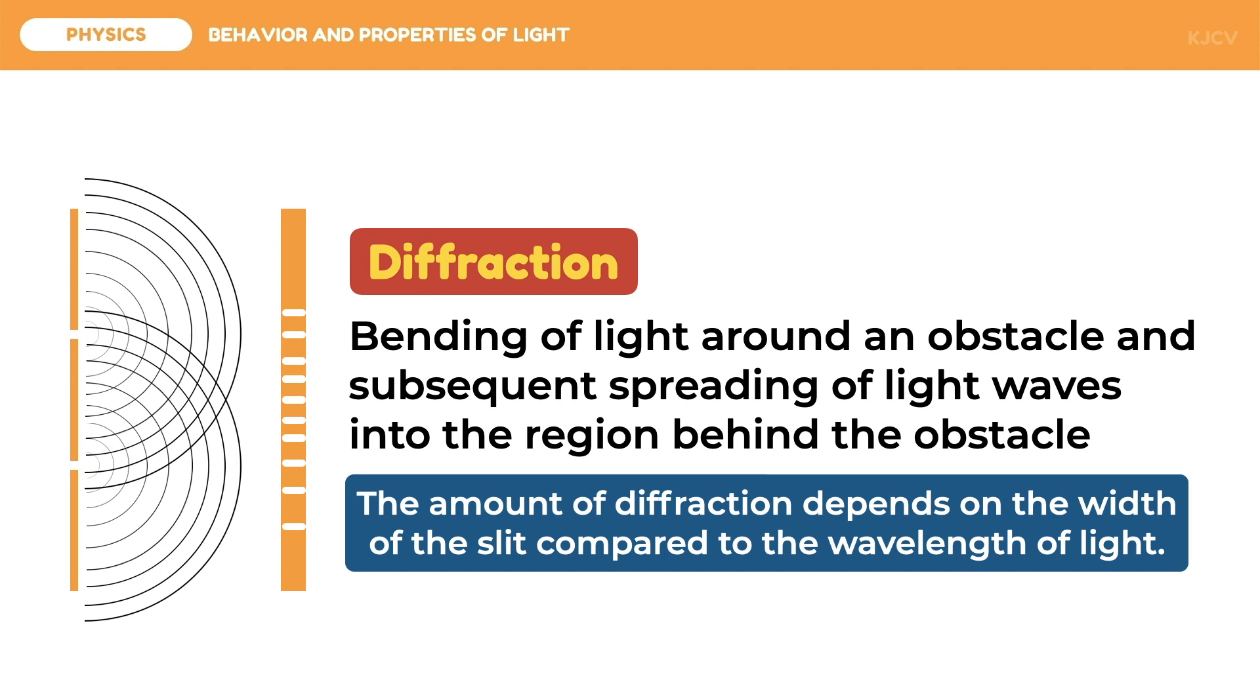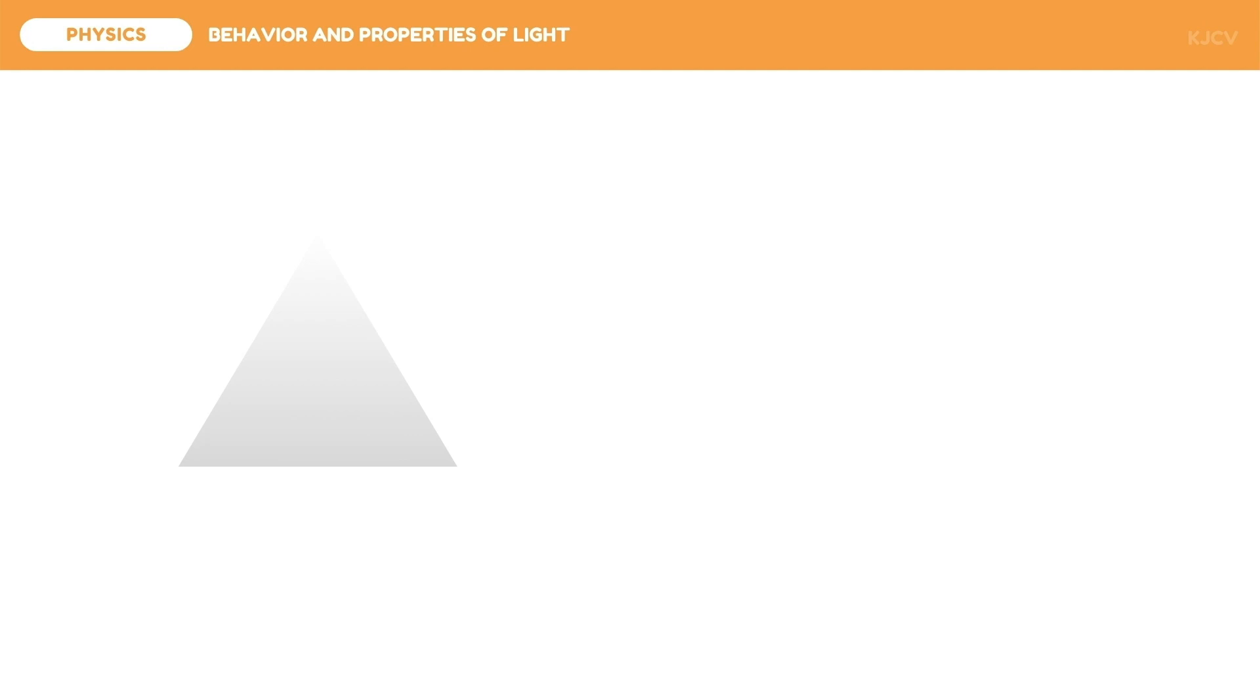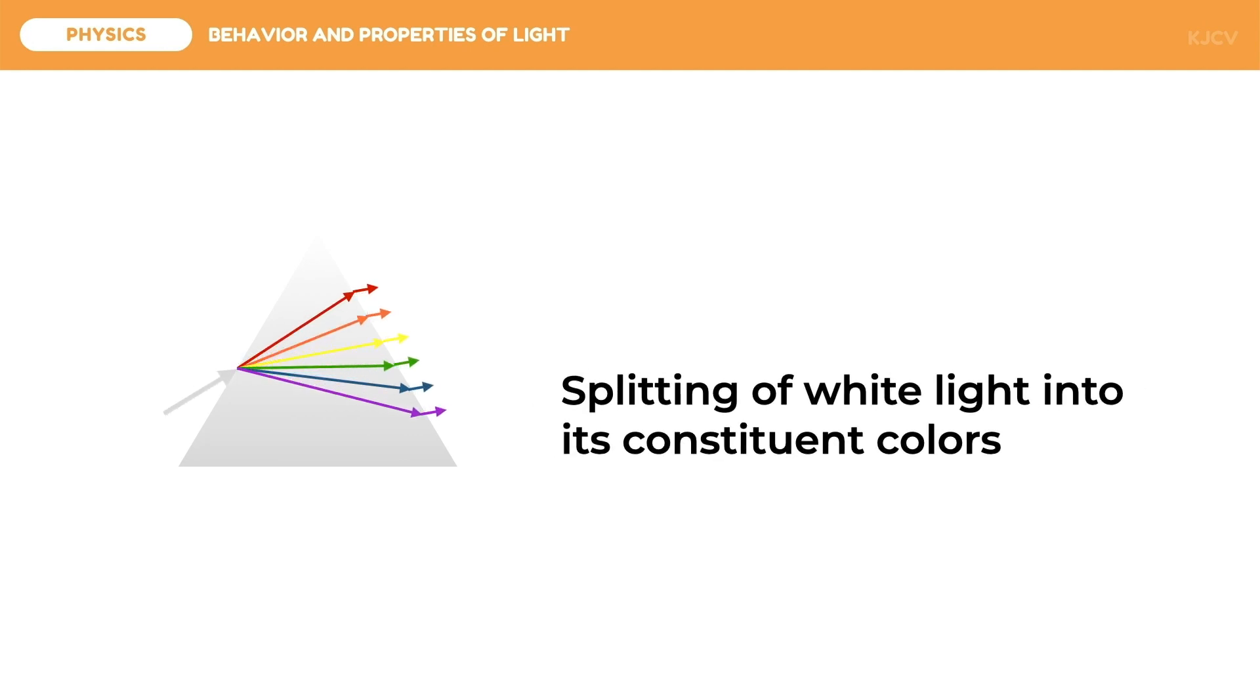Another property of light is evident when white light enters a prism and it splits into its constituent colors. This is called dispersion. The band of colors is called spectrum and is comprised of red, orange, yellow, green, blue, and violet light. Red light has the longest wavelength but has the least index of refraction and is therefore bent the least. On the contrary, violet is refracted the most. That is why red is on top while violet is at the bottom of the spectrum. This is evident in rainbows.